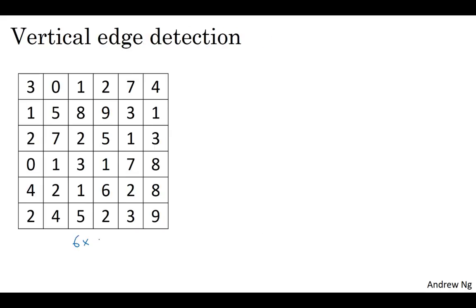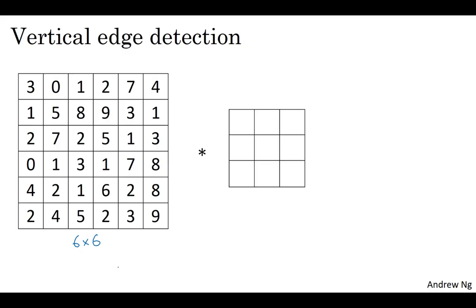Here is a six-by-six grayscale image. Because this is a grayscale image, this is just a six-by-six-by-one matrix, rather than six-by-six-by-three, because there aren't separate RGB channels. In order to detect vertical edges in this image, what you can do is construct a three-by-three matrix. In the terminology of convolutional neural networks, this is going to be called a filter. I'm going to construct a three-by-three filter that looks like this: 1, 1, 1, 0, 0, 0, -1, -1, -1. Sometimes research papers call this a kernel instead of a filter, but I'm going to use the filter terminology in these videos.